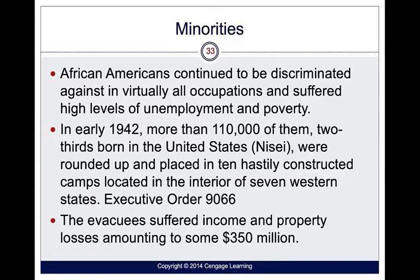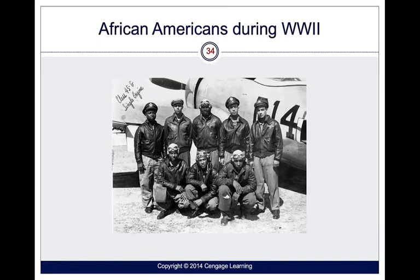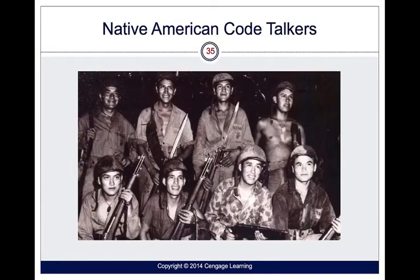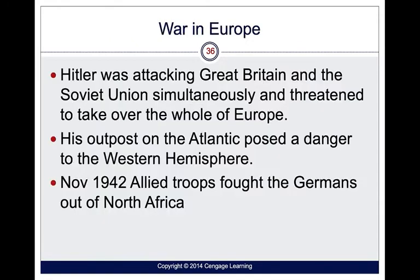Minorities also made a very real contribution. Even though many Japanese Americans — some second and third-generation citizens — were placed in internment camps under Executive Order 9066, and African Americans were still discriminated against, they still served. This is a picture of the Tuskegee Airmen, an incredible and harrowing story. Native American Code Talkers is another interesting story — there's a Nicolas Cage movie about it, but also some very good documentaries.